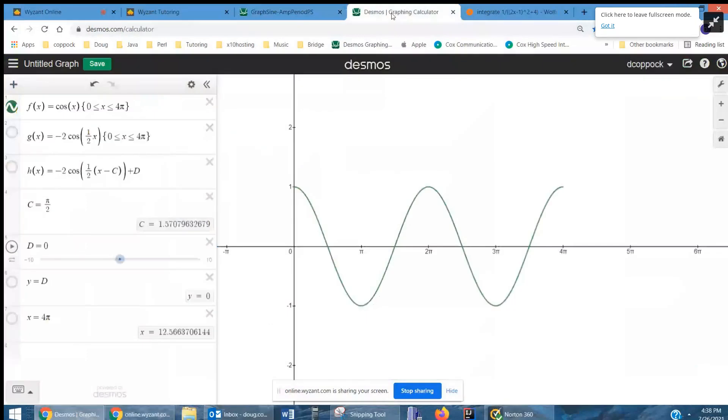We'll go to Desmos, and here I've graphed the cosine function, the basic function. I've cut it off with a domain from zero to 4π. Here you can see I start at zero; by the time I get to 2π, the graph has gone through one cycle.